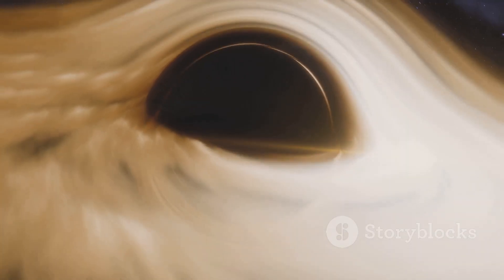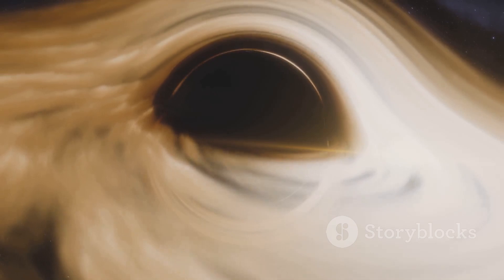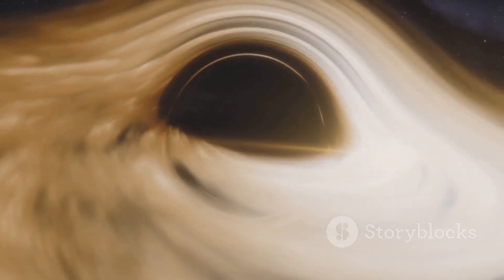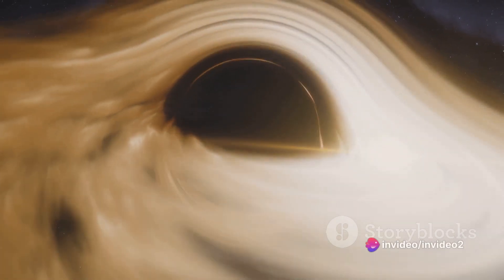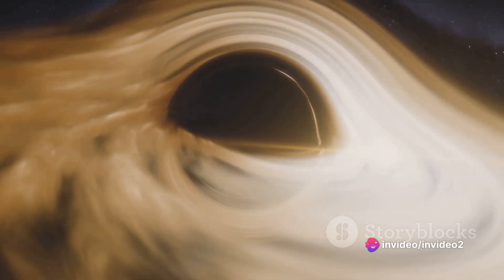Imagine a rubber sheet stretched tight. If you place a heavy ball in the center it will cause the sheet to sag around it. That's a simplistic representation of how a black hole distorts space-time.